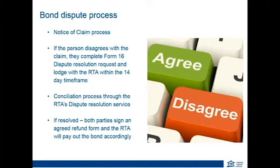Following on from the notice of claim process, if someone has disputed the claim within the timeframe, this will lead to a conciliation with the RTA's dispute resolution service. The RTA needs information about the claim on the bond — the sooner the lessor agent can get more information to us, the quicker the conciliators can deal with the matter. The role of the conciliator is impartial — they are there not to take sides but to facilitate discussion and negotiations to see if the matter can be resolved. It is a voluntary process, though we strongly encourage participation. The RTA has an 82% resolution rate where parties do participate in the conciliation process.